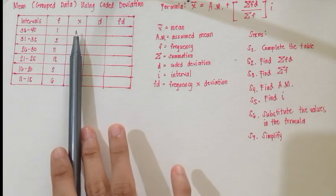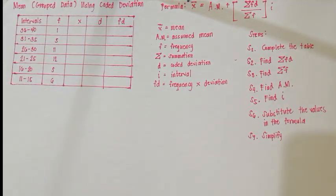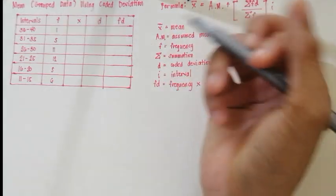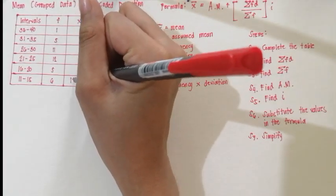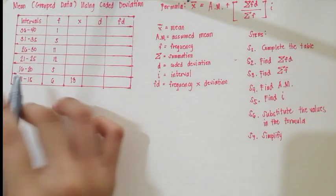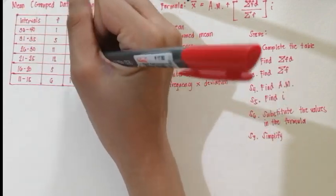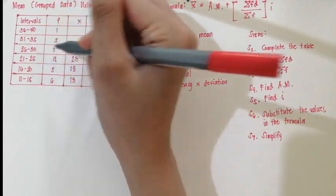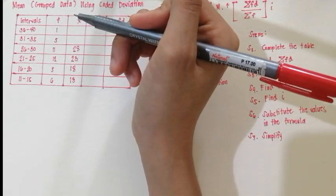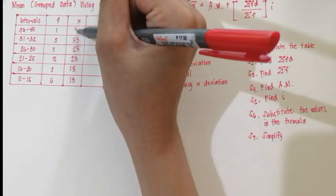I already taught you how to find the class mark of the intervals. For 11 to 15, the class mark is 13 — just find the middle score in that interval. 16 to 20, it's 18. 21 to 25, it's 23. 26 to 30, it's 28. 31 to 35, it's 33. And 36 to 40, it's 38. We are done now with the class marks.